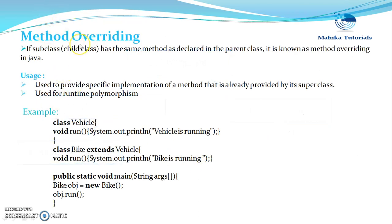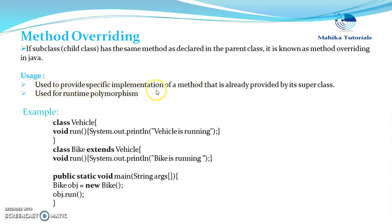First we will see what is method overriding and then we will see how runtime polymorphism can be achieved using it. If a subclass or child class has a method as declared in the parent class, it is known as method overriding. It is used to provide specific implementation of a method already provided by its superclass, and it is used to achieve runtime polymorphism.